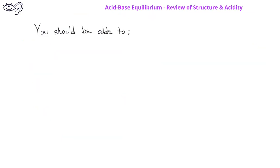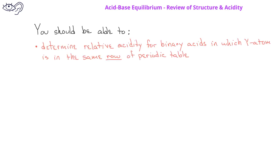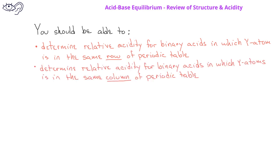By now, you should be able to determine the acidity of binary acids. For those that fall in the same row, you would compare the polarity of the bonds, whereas for binary acids that are in the same column, you would compare the size of the anion to determine which one is more acidic.